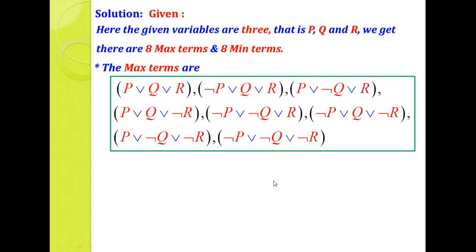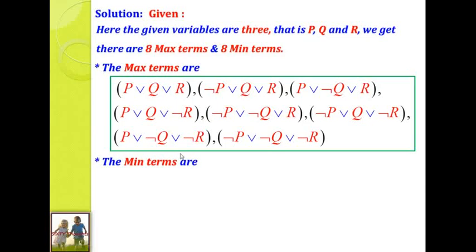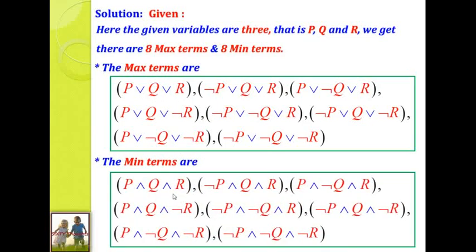Similarly, I am going to write eight min terms using these three variables. What is the min term definition? Using these three variables connected by the AND operator, you get the first term. Taking negation of any one variable gives three more terms. Taking negation of any two variables gives the next three terms. Finally, taking negation of all terms gives negation P AND negation Q AND negation R — that is why we write the AND operator. That is the min term definition. All terms are different; no same term and its negation appear. So these are called min terms.